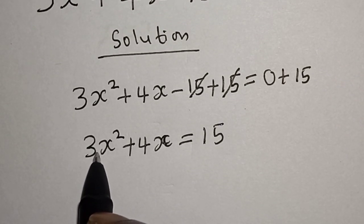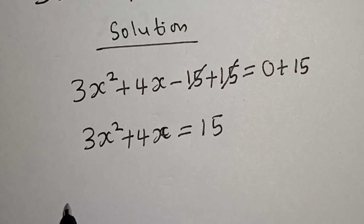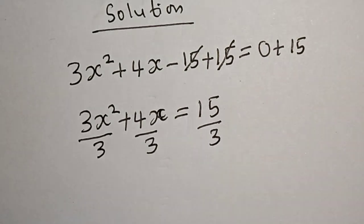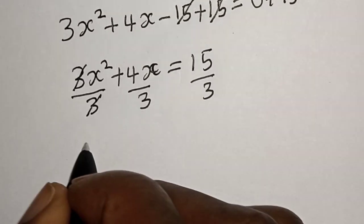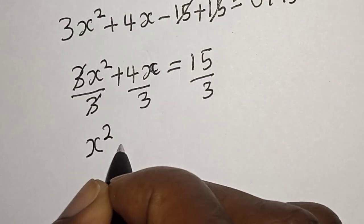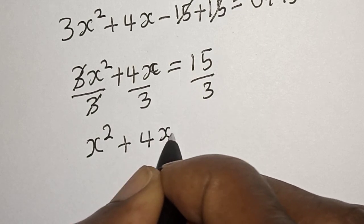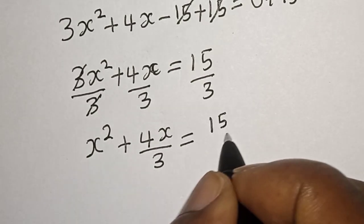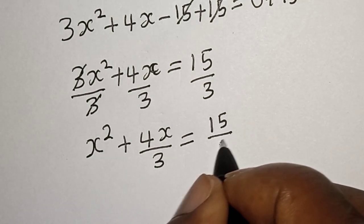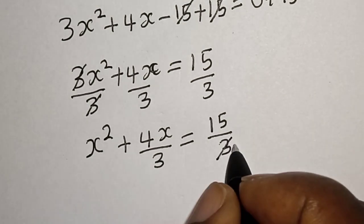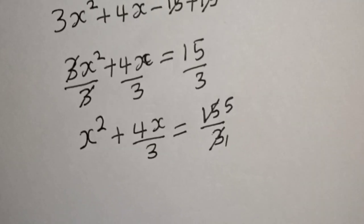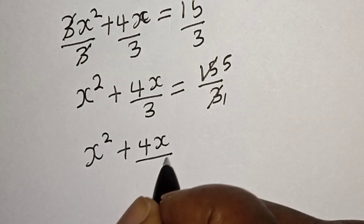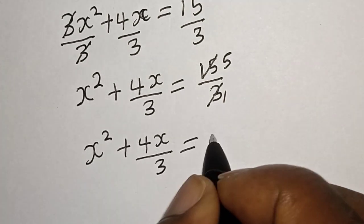Now the coefficient of x² here is 3. Let's divide all terms by 3: divided by 3, divided by 3, divided by 3. This will cancel, and we have x² + 4x/3 = 15/3, which simplifies to x² + 4x/3 = 5.